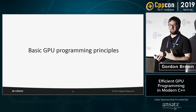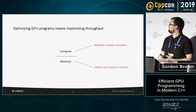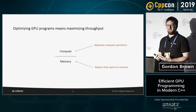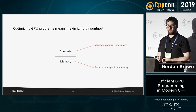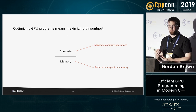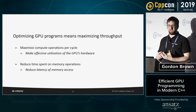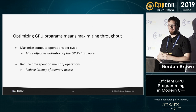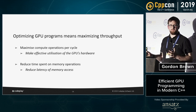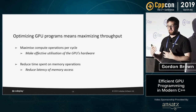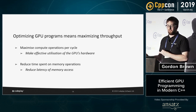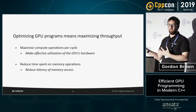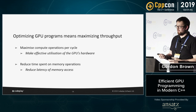Now I'll go into some basic GPU programming principles for optimizing this. The general principle is to maximize throughput: maximize compute operations and reduce time spent on memory operations. Maximizing compute means taking advantage of the GPU's hardware — utilizing all execution elements to their fullest. Reducing memory time doesn't always mean fewer memory operations; it means reducing latency, which can mean moving data to a lower-latency memory region.